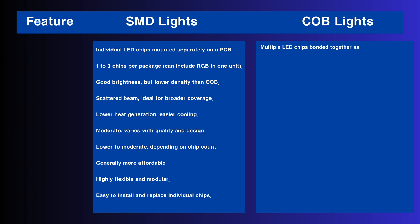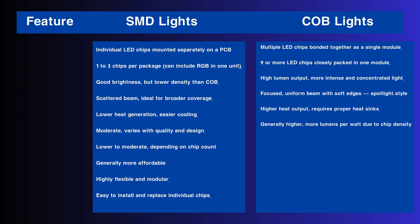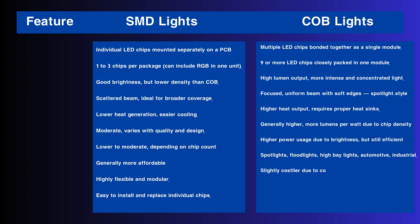Let's discuss COB. Multiple LED chips bonded together as a single module — nine or more LED chips closely packed in one module. High-lumen output, more intense and concentrated light. Focused, uniform beam with soft edges. Spotlight-style, higher heat output requires proper heat sinks. Generally higher efficiency — more lumens per watt due to chip density. Higher power usage due to brightness, but still efficient. Applications include spotlights, floodlights, high bay lights, automotive, and industrial. Slightly costlier due to compact high-power design — less modular, built for specific power density applications.